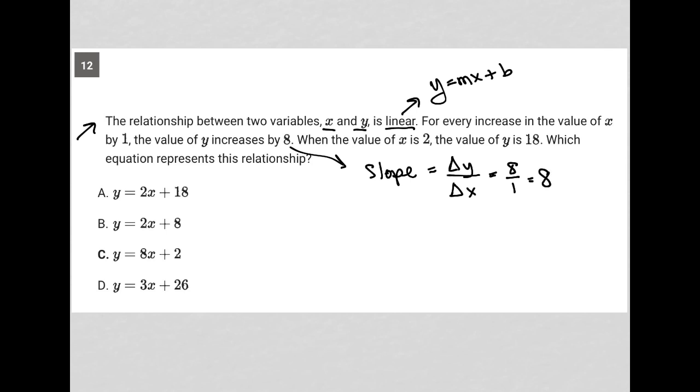And the slope from our equation is the m value, so we know m is equal to 8. The next sentence says when the value of x is 2, the value of y is 18. So we have a point there. Which equation represents this relationship?